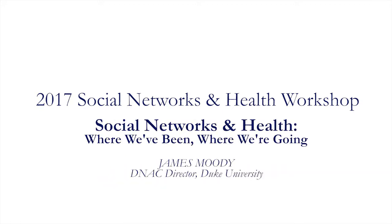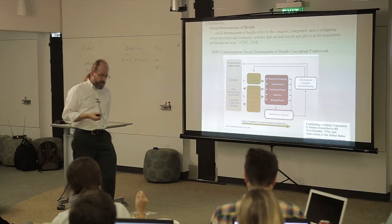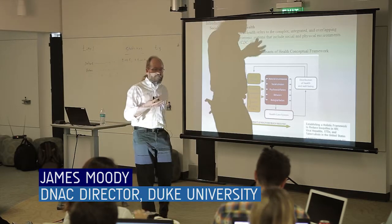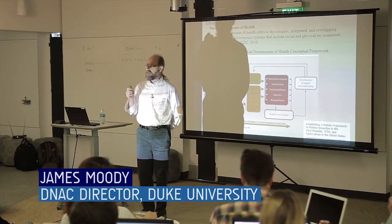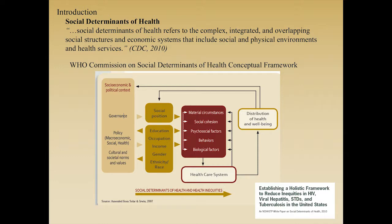The big picture within which we're moving is this basic idea of the social context of health — the social determinants of health — that there's a big difference between a biological model of health and a basic understanding of how health disparities are distributed across the population. This has really gained the attention of people at the CDC and NIH, and they've developed different kinds of models about how individuals are embedded within different social systems and how those embeddings can create different outcomes for health.